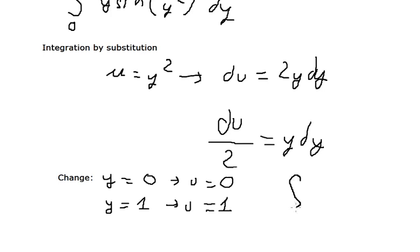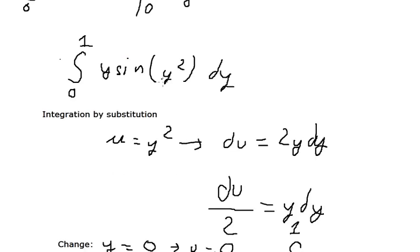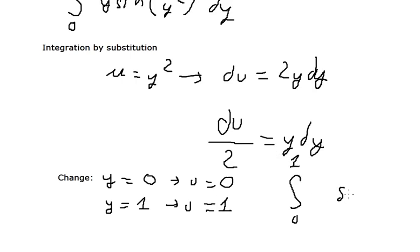So the boundary keeps the same. This one will change to u. y dy will change to du over 2.